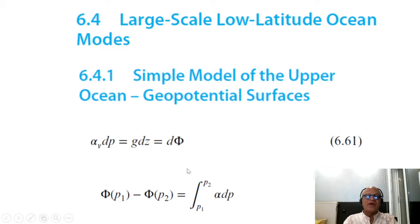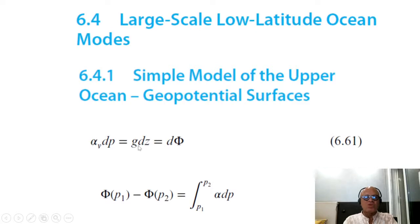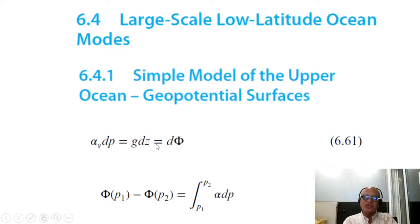We can write the hydrostatic balance for the ocean as dp/dz = ρg, or equivalently 1/ρ dp = g dz, where 1/ρ is of course α_v, the specific volume, and g dz is dφ, the geopotential.